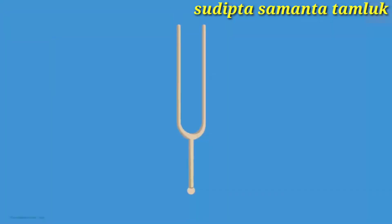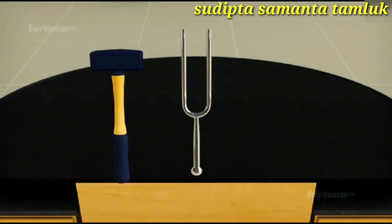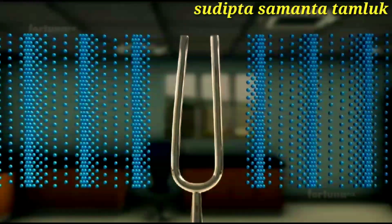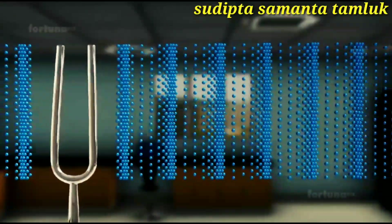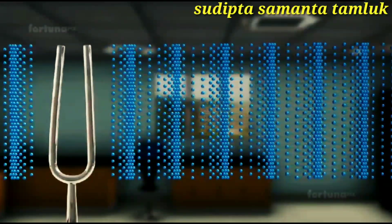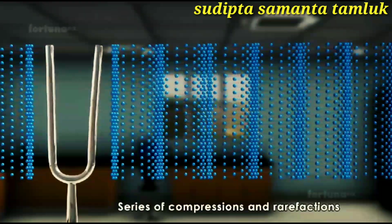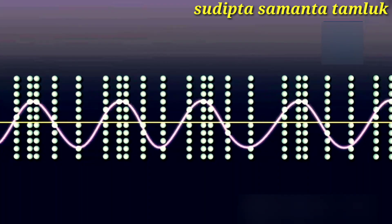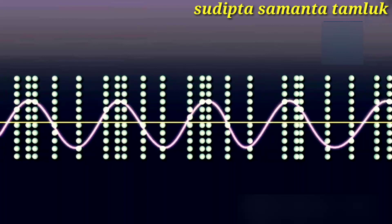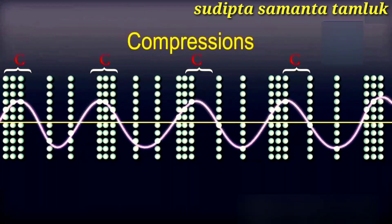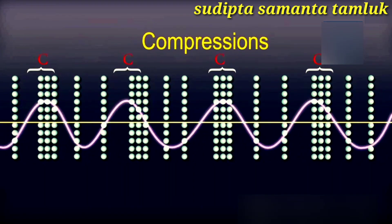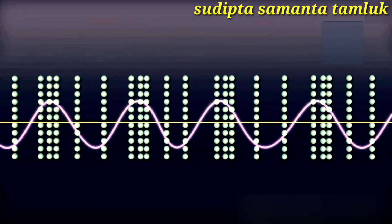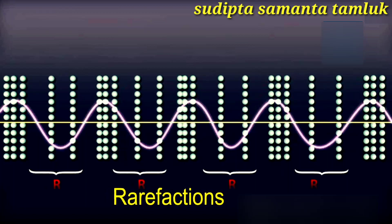Let us study this with the help of a tuning fork. As the tines of a tuning fork vibrate back and forth, they disturb the surrounding air molecules, and these disturbances are passed on to adjacent air molecules. The continuous vibration of the tines creates a series of compressions and rarefactions. The region of high pressure, where particles are very close to each other, is known as compression, denoted by C. The region of low pressure, where particles are far apart, is known as rarefaction, denoted by R.